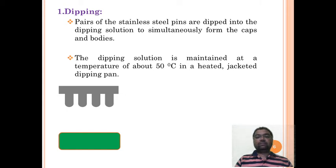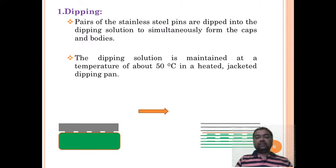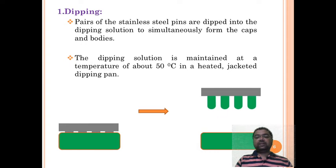Let's look at how this happens by simple animation. In gray color you can observe the pins and the molten gelatin. In dipping, these pins dip into the gelatin solution and then lift up, and the pins get covered with gelatin solution. This is called the dipping step.